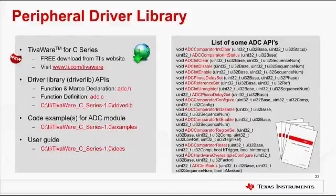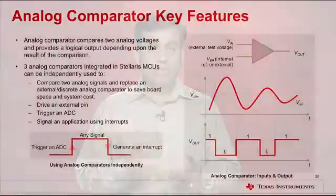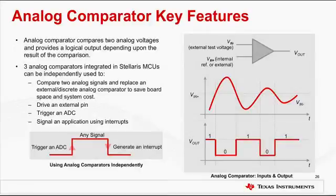I strongly encourage you to take a look at that before you start using these functions. Now let us take a quick look at the analog comparators. An analog comparator is a peripheral that compares two analog voltages and provides a logical output that signals the comparison result. The comparator can provide its output to the device pin, acting as a replacement for an external analog comparator. There are three analog comparators integrated in TM4C123X devices. The analog comparator can be used to signal the application via interrupts or trigger the start of a sample sequence in the ADC.